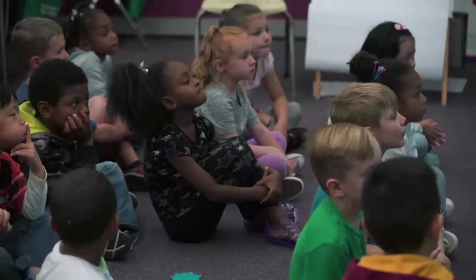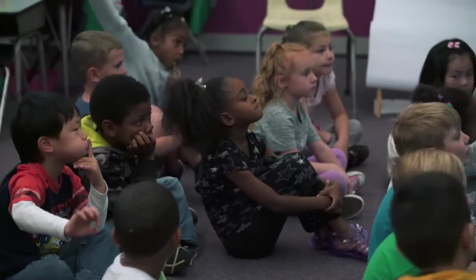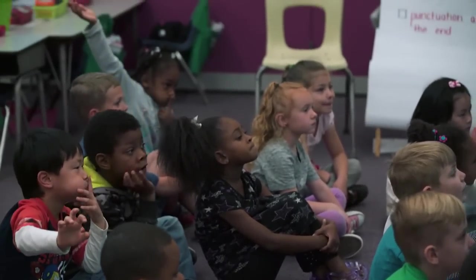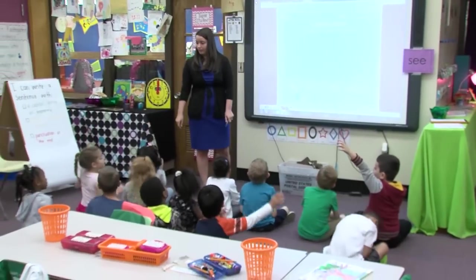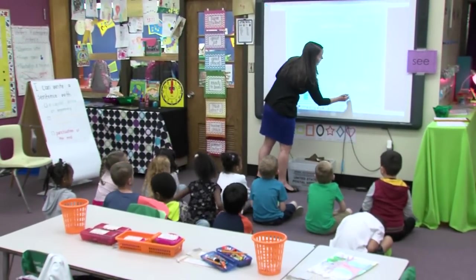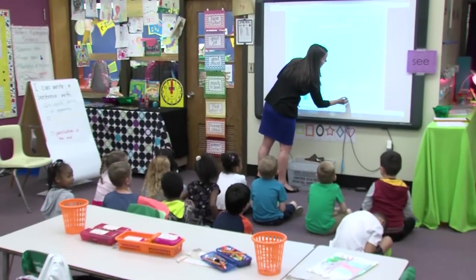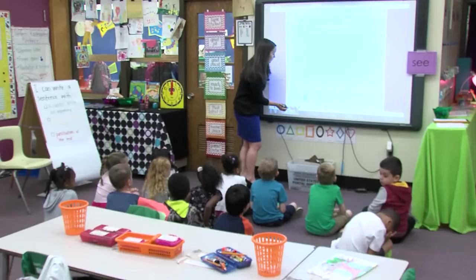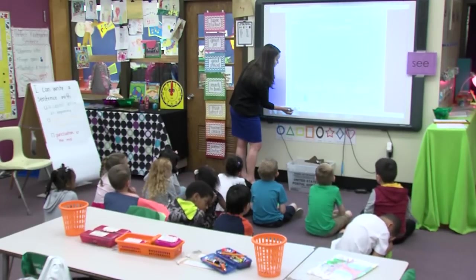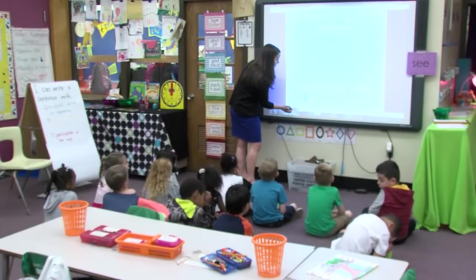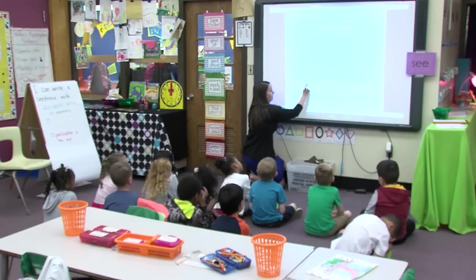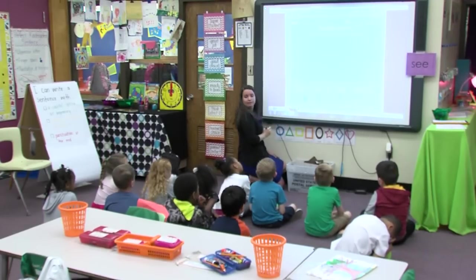And then for our next one, what did we say we needed in the middle? Finger spaces. So we're going to make that part yellow right here, and what we're going to do is in between our words we are going to color the space that we have yellow like that.